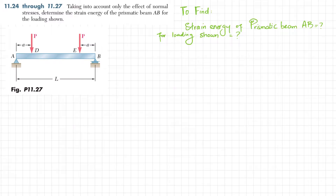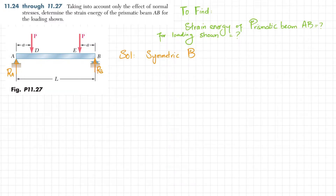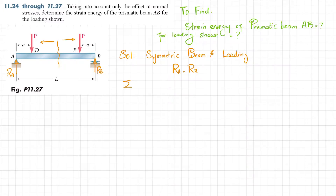The first step is to find the reactions at support points A and B. There will be a reaction force at both A and B. Because the beam has symmetric loading, you can see that if you take the beam at the midpoint, the loading on each side is equal, which means RA is equal to RB.